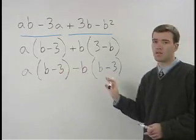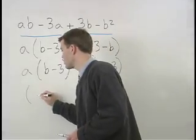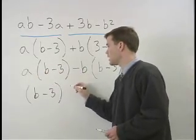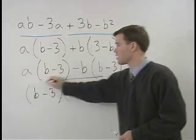Now we can factor out the greatest common factor B minus 3 from these two terms, and we're left with A minus B inside your second set of parentheses.